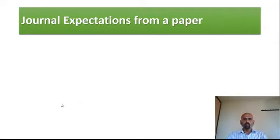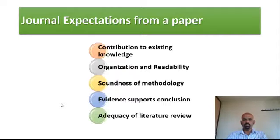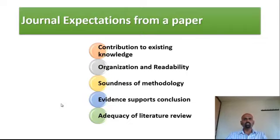What are the expectations of a journal from a paper? First, they will check whether your paper contributes to existing knowledge. Second, whether your paper is well organized and readable. Third, the soundness of your methodology. Fourth, whether you have proper evidence to support your conclusion. Fifth, whether you have an adequate and exhaustive literature review. These are the key expectations of any journal from any paper.